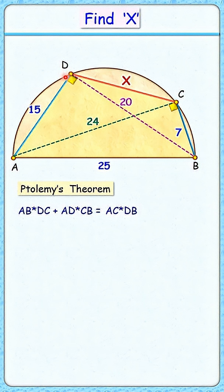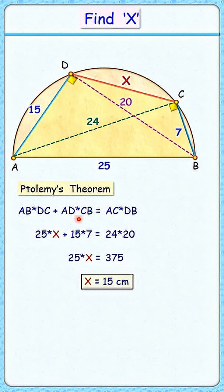Putting the values: 25 times X plus 15 times 7 equals 24 times 20. Solving, we get 25X equals 375, or X equals 15 centimeters. That's our answer.